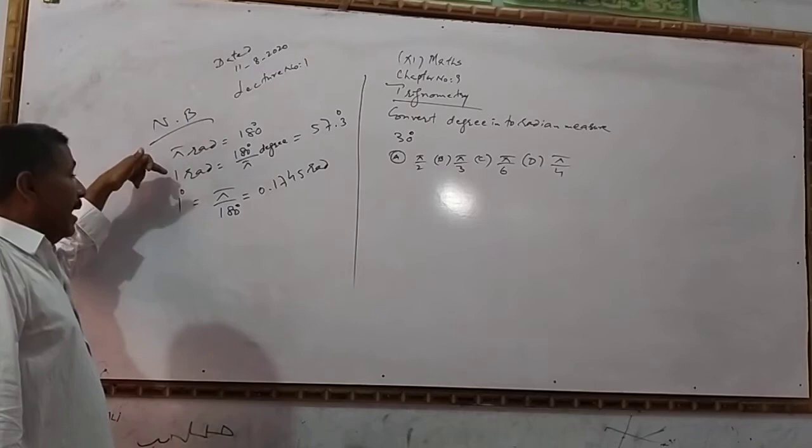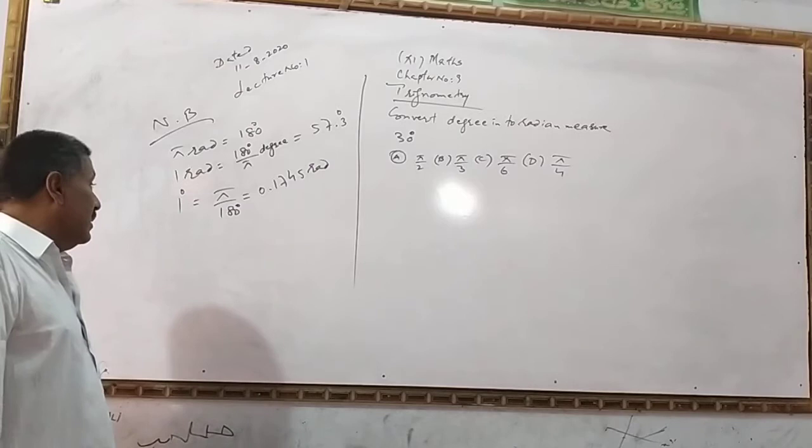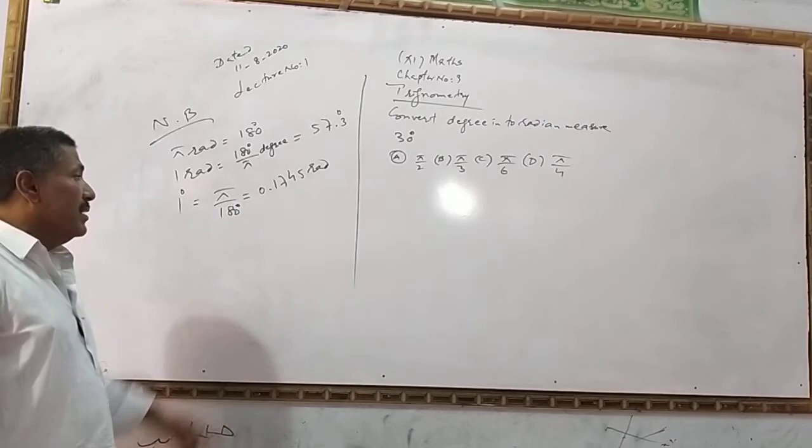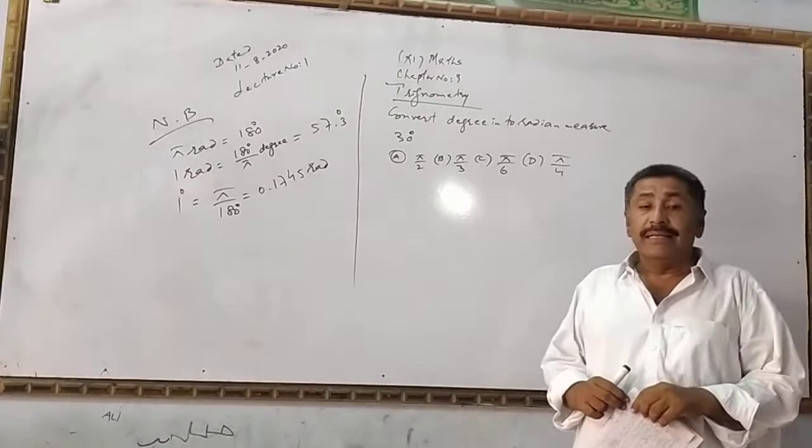So, π radian equals 180 degrees. Therefore, 1 radian equals 180 upon π, which equals 57.3 degrees. And 1 degree equals π upon 180, which equals 0.0174 π radian.